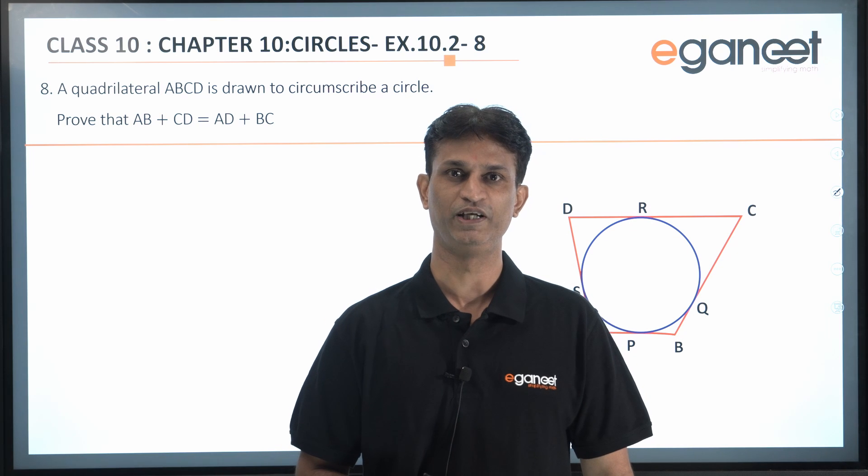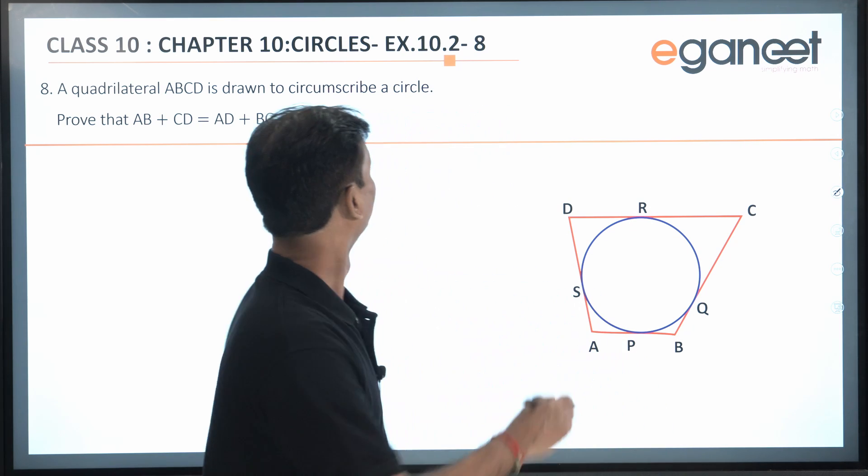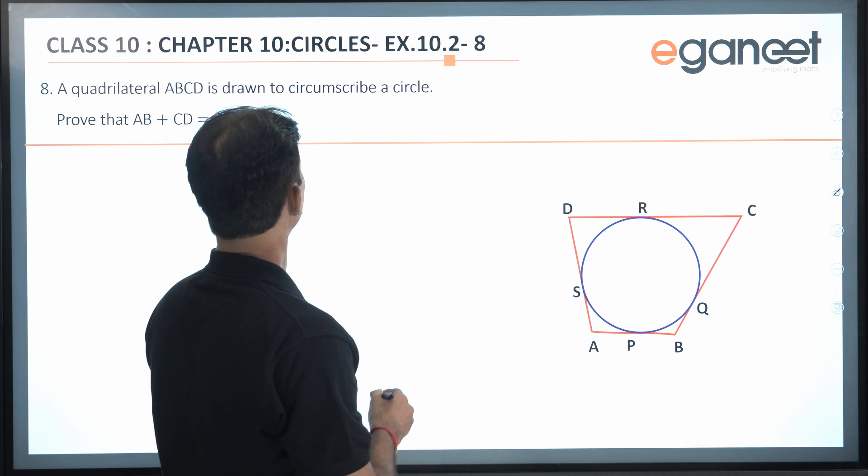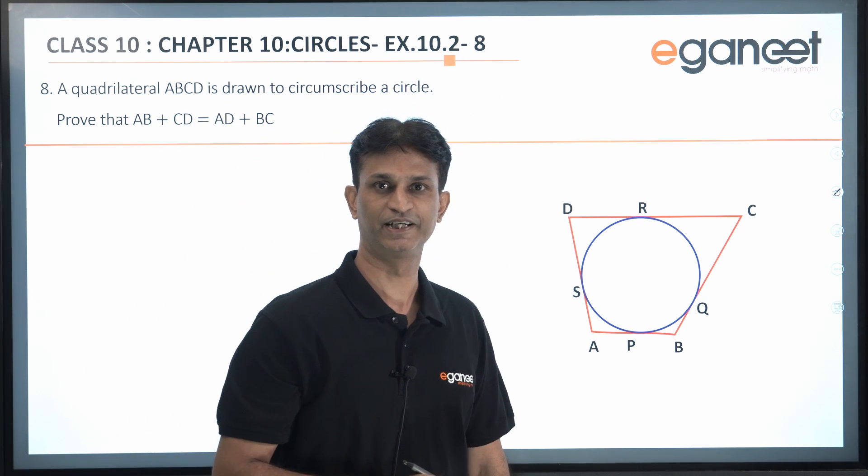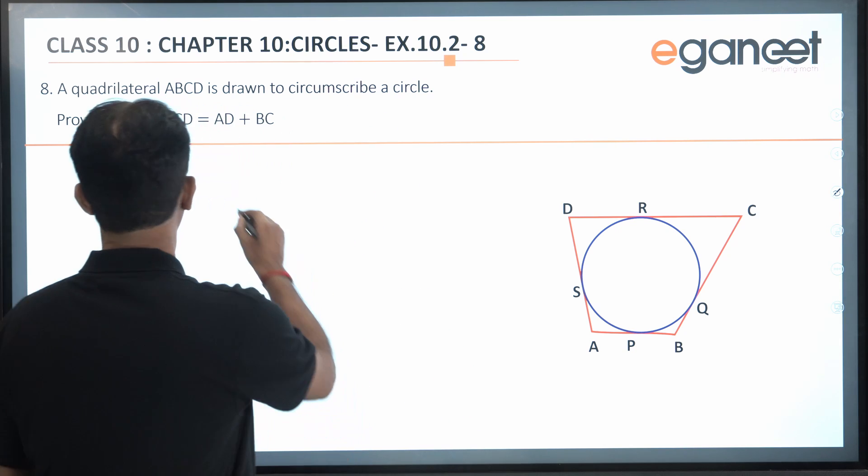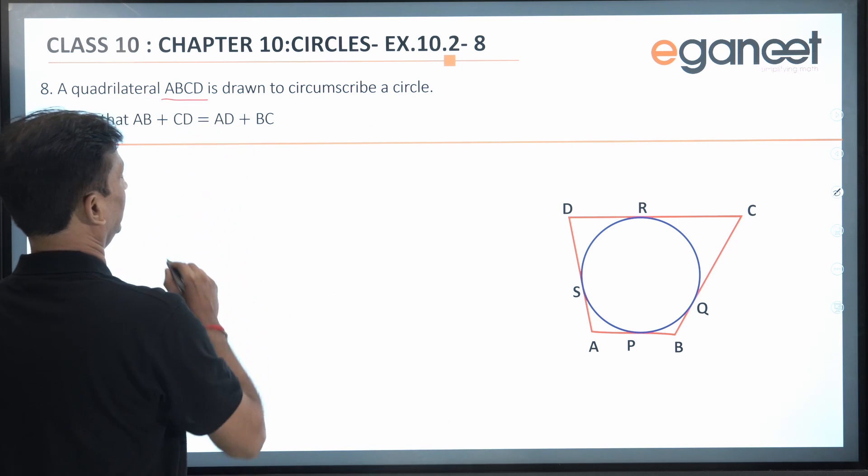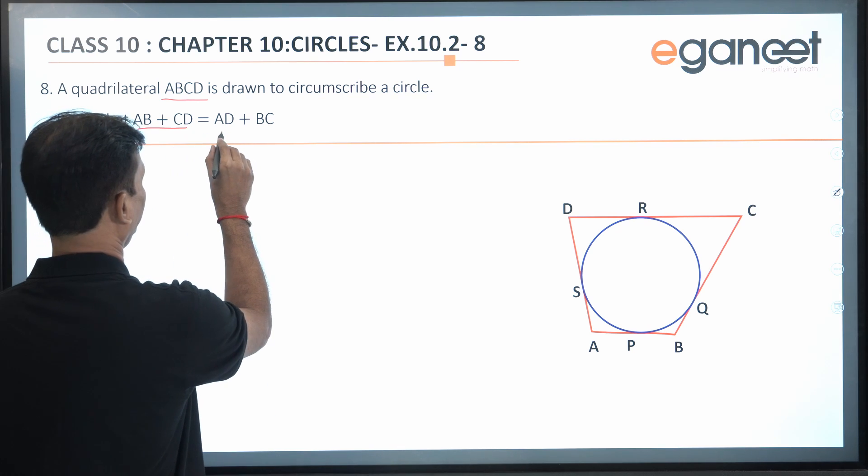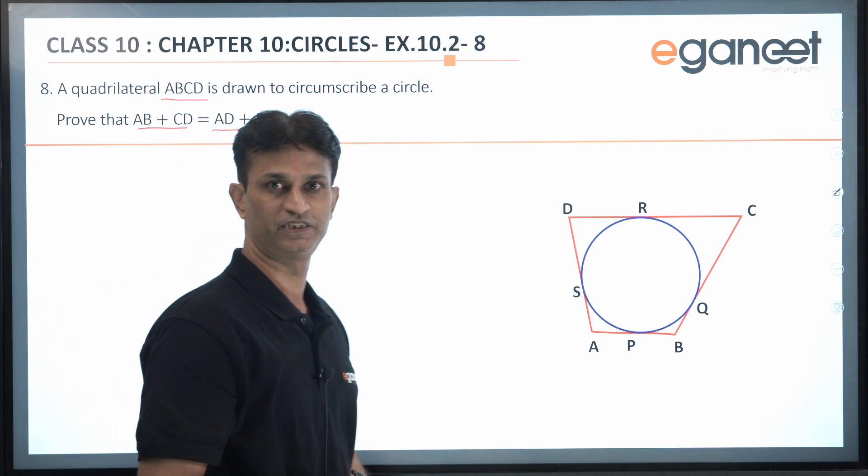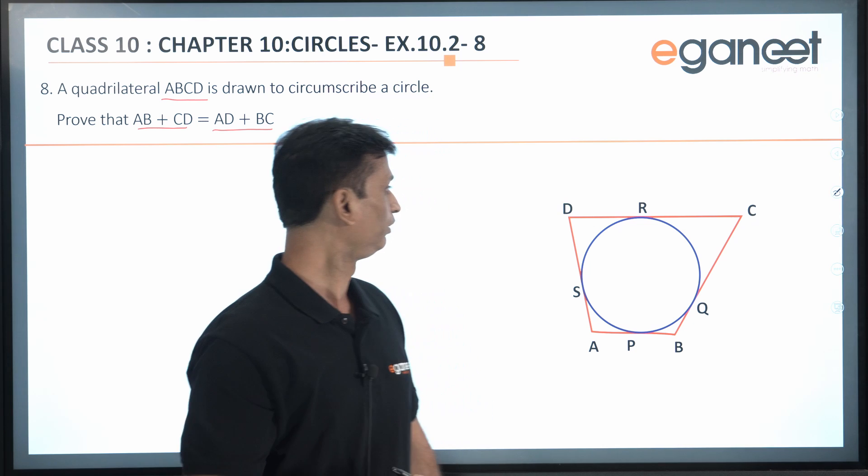Hello students, welcome to Eganeet. Today we are going to take the 8th problem of Exercise 10.2, Chapter 10 - Circles. Let's read the problem first. A quadrilateral ABCD is drawn to circumscribe a circle. We have to prove that AB + CD = AD + BC.